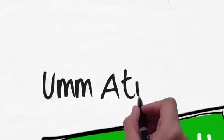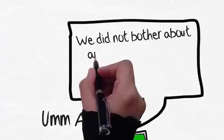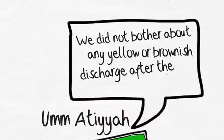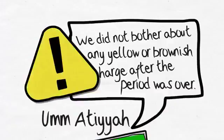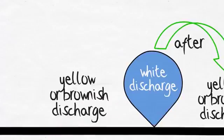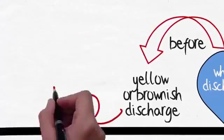Umm Atiyah said we did not bother about any yellow or brownish discharge after a woman's period was over, but you should not rush because the yellowish discharge which immediately follows the bleeding before the white discharge is still part of your menstrual flow.